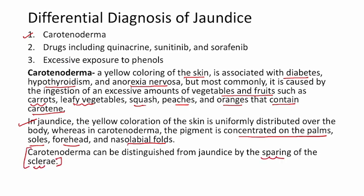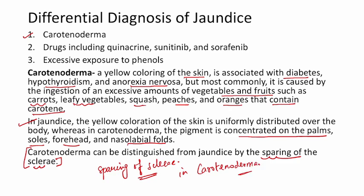Importantly, carotenoderma spares the sclerae, and the pigment is concentrated on the palms, soles, forehead, and nasolabial folds — very important to understand the difference between carotenoderma and jaundice. Additionally, drugs like quinacrine, sunitinib, and sorafenib may cause yellowish discoloration, and excessive exposure to phenols may also cause yellow discoloration of the skin. All these are the differential diagnoses of jaundice.